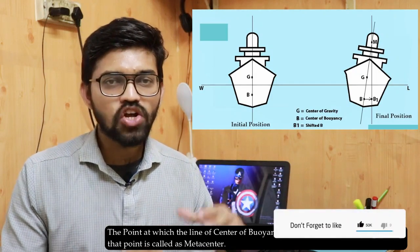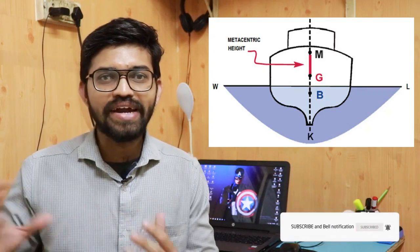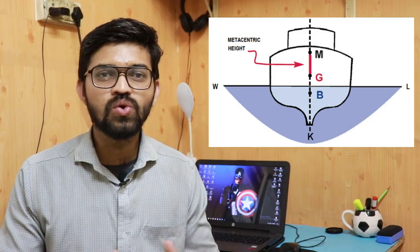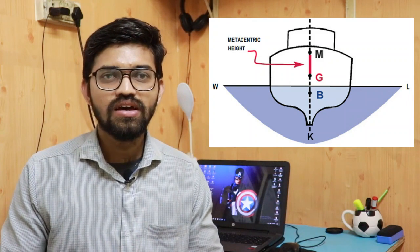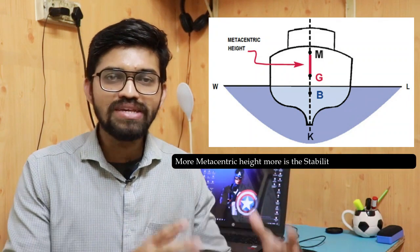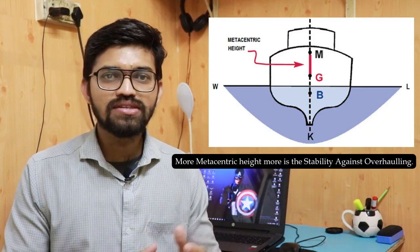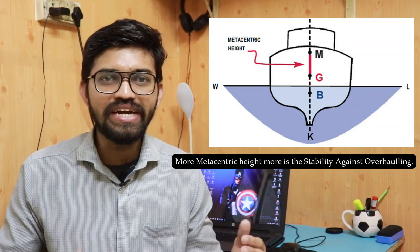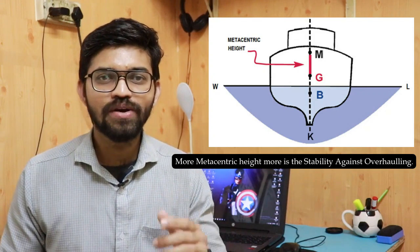The distance between the center of gravity and the metacenter is called the metacentric height. This term is used to design ships and passenger ships — the greater the metacentric height, the greater the stability against overturning. This is the important factor that determines the stability of a ship and prevents it from sinking.